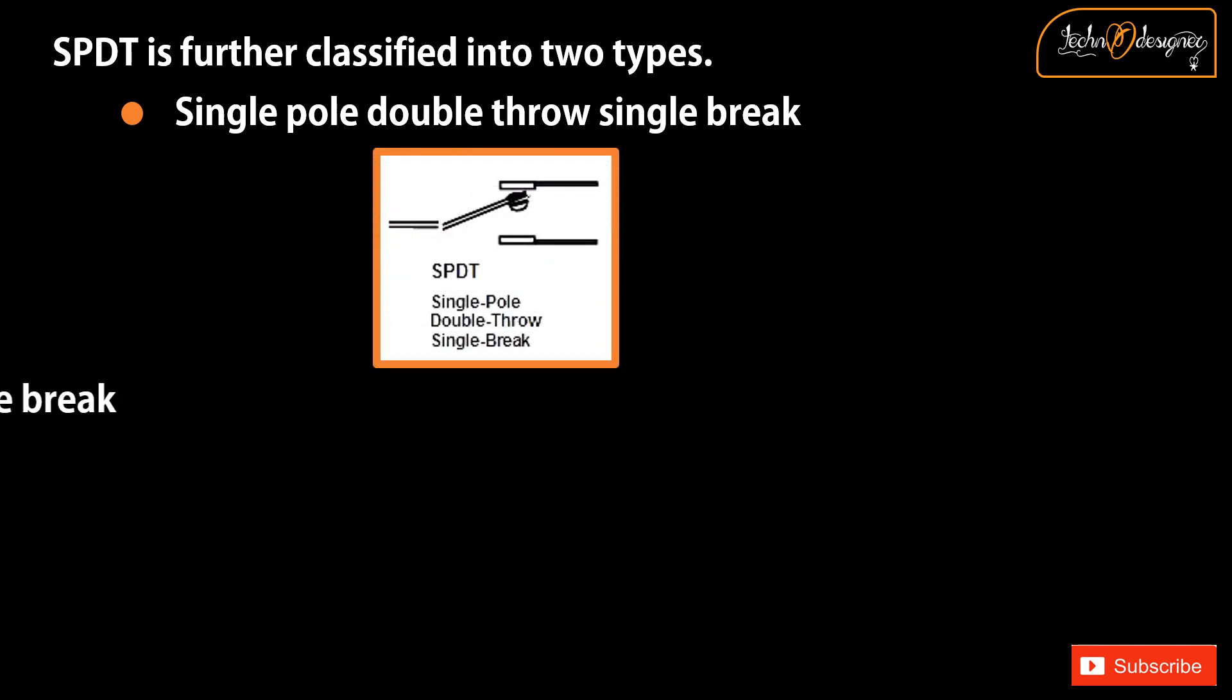SPDT is further classified into two types: Single pole double throw single break, and Single pole double throw double break.